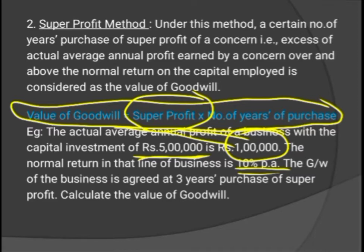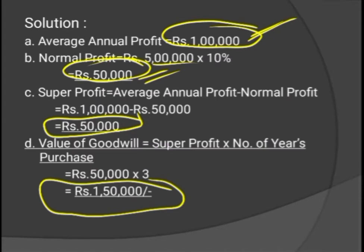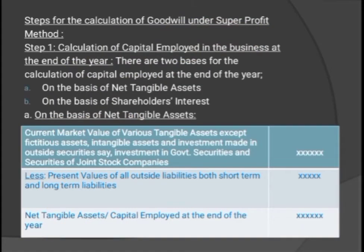In actual exam questions, such direct information will not be given. You have to calculate capital employed at the end of the year, then average capital employed, then normal return on average capital employed, because there are many adjustments to be made. Let us now discuss the various steps for the calculation of goodwill under the super profit method.